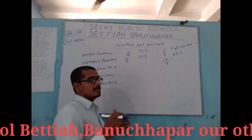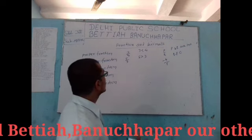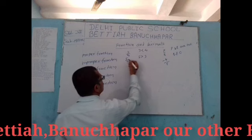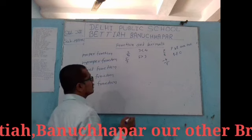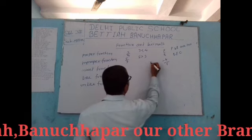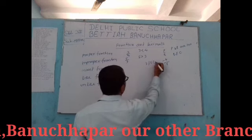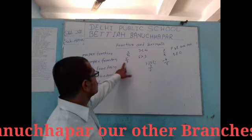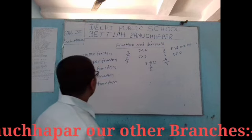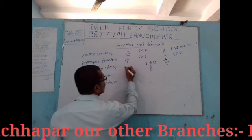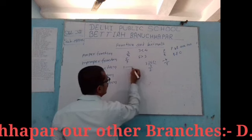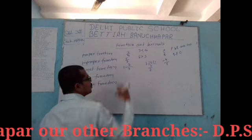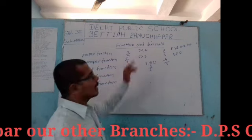Only an improper fraction can be changed into a mixed fraction. To do this, divide the numerator by the denominator. For example, 5 divided by 3: 3 goes into 5 once with a remainder of 2. So this improper fraction can be written as a mixed fraction: 1 whole 2 by 3. That is the mixed fraction of 5 by 3.